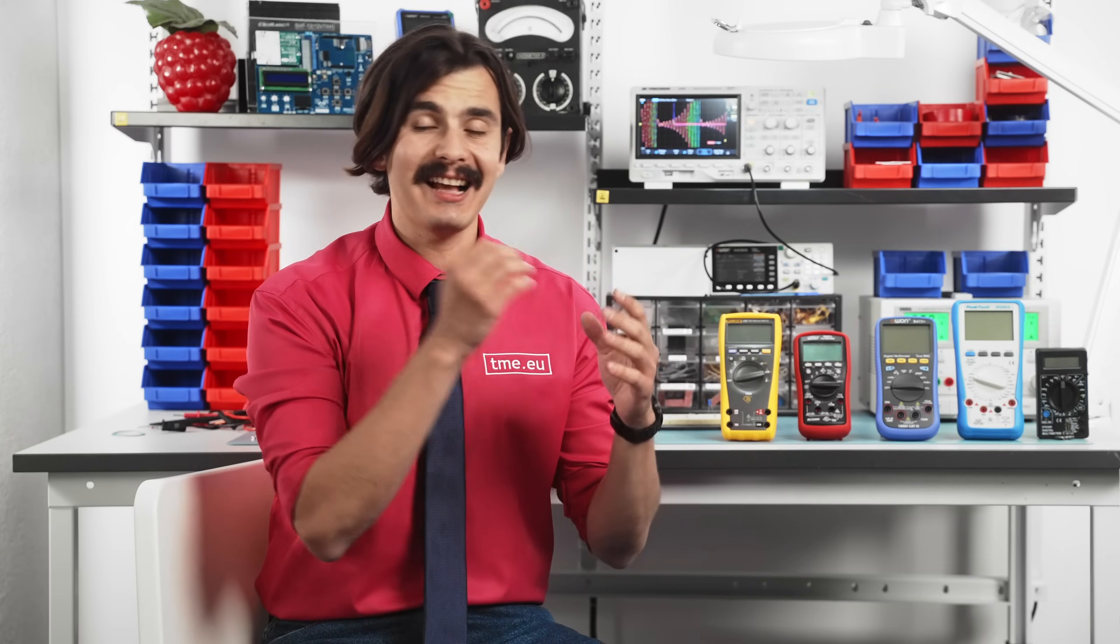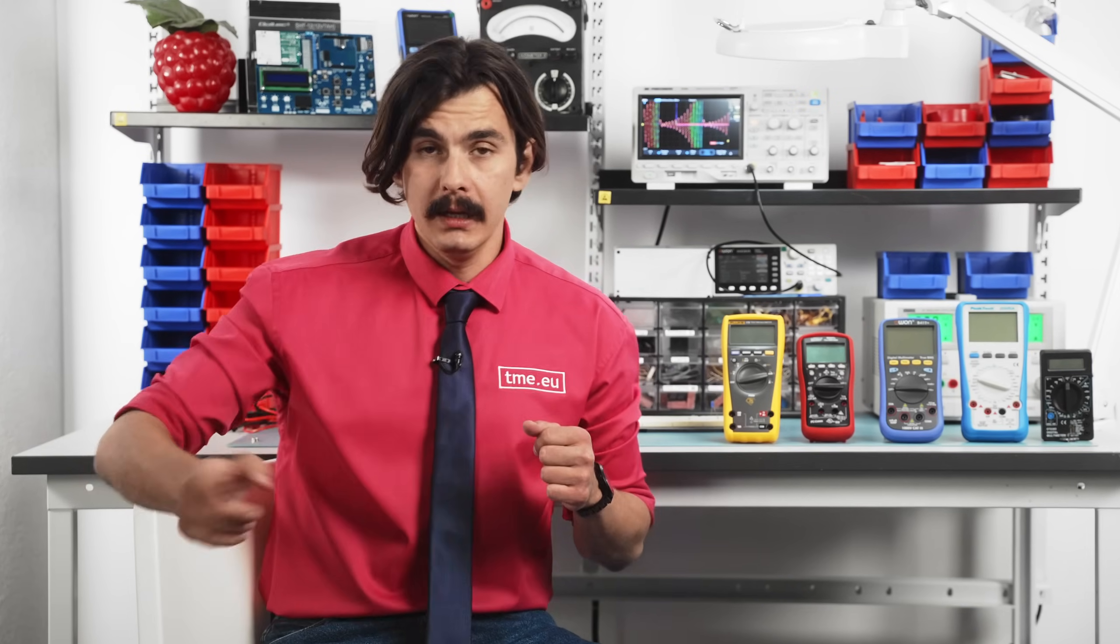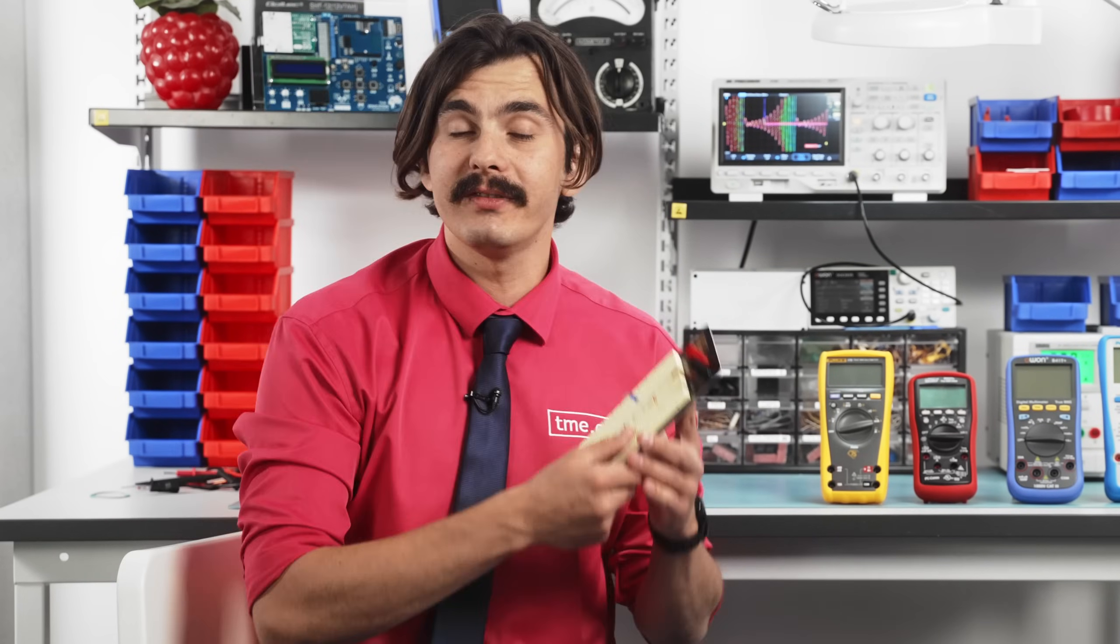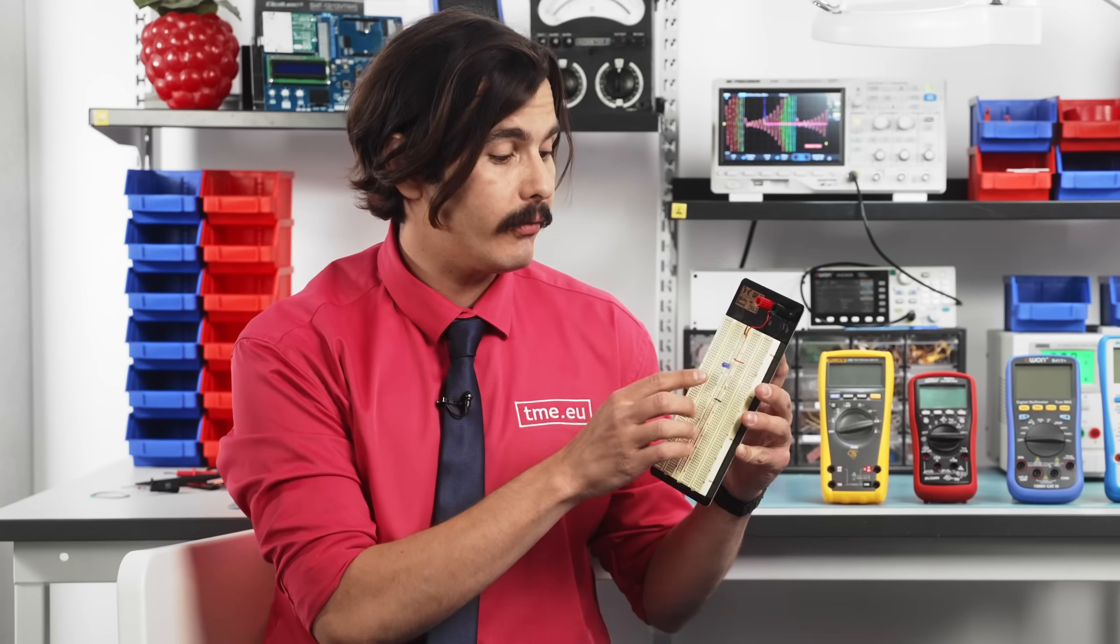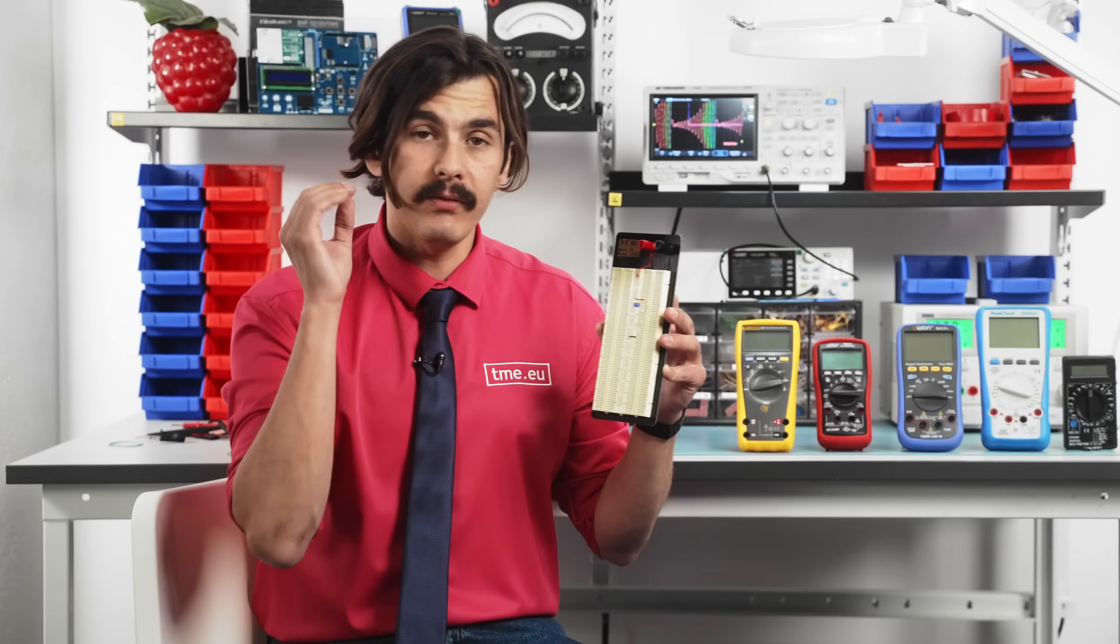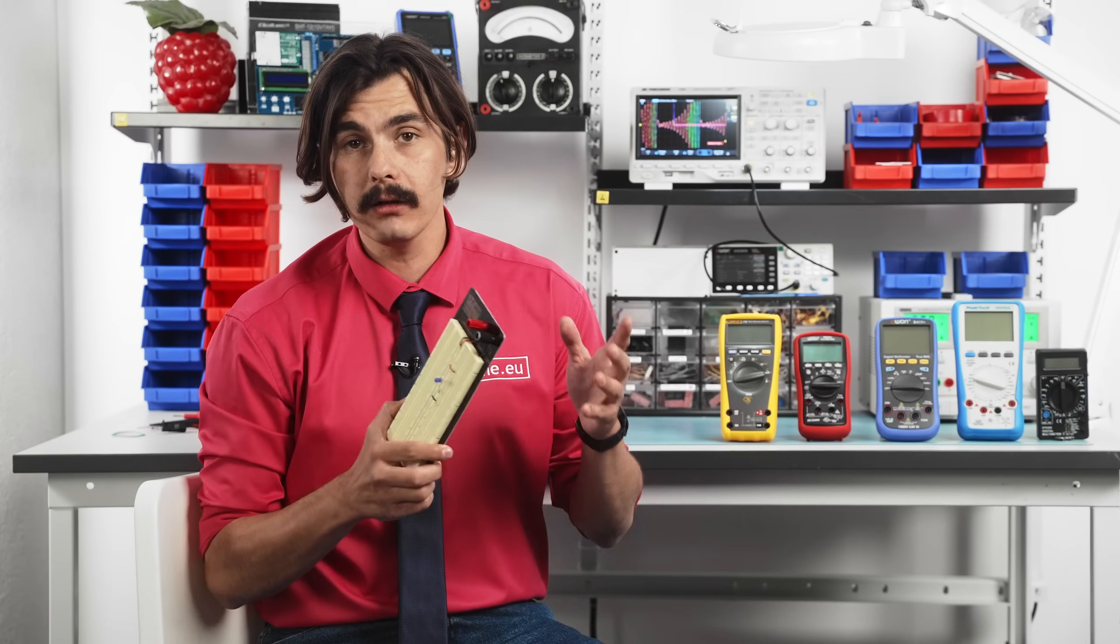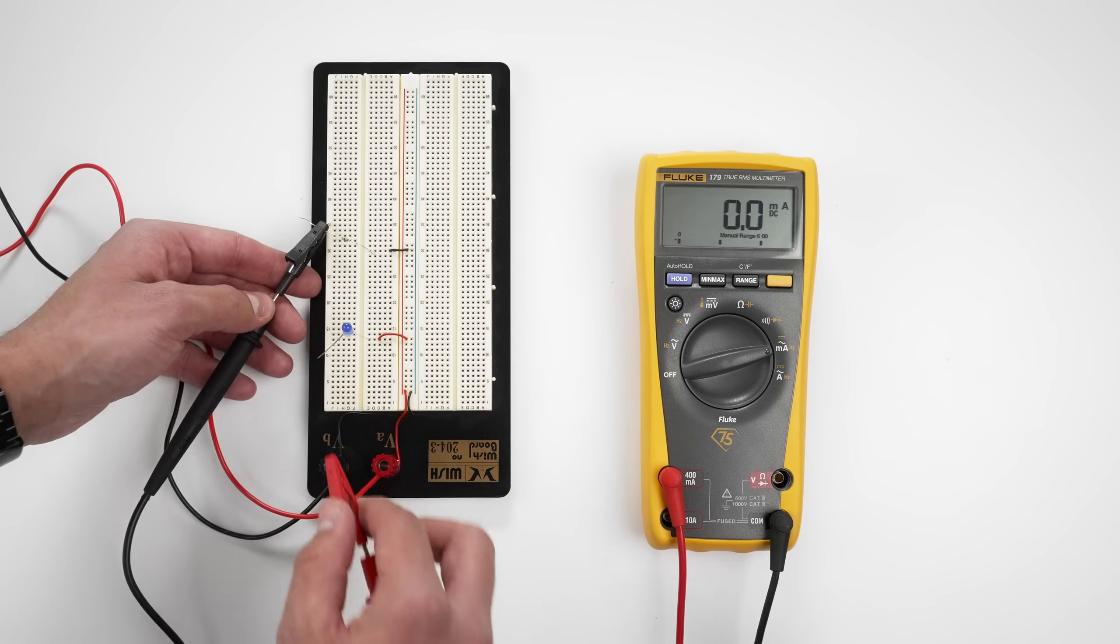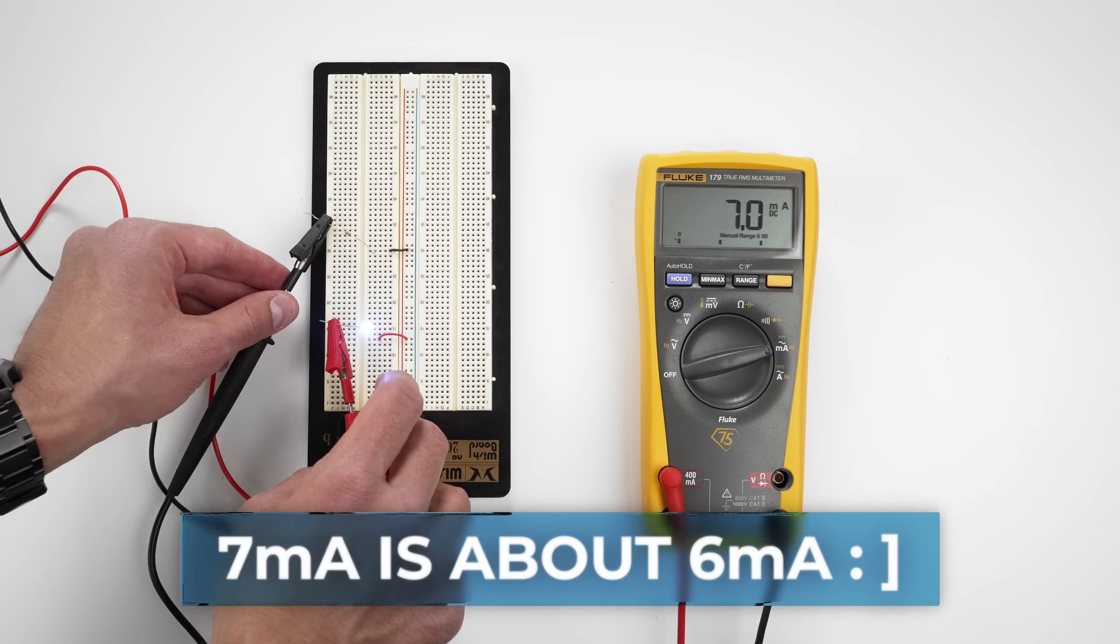Current measurements, or as Mr. Gorecki says, current intensity measurements, require inserting the multimeter in series with the circuit. In our example, where we have 5 volts from the power supply, 330 ohms resistance, and 3 volts forward voltage of the LED, if we use Ohm's law and calculate, the current is about 6 milliamps.